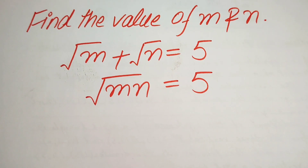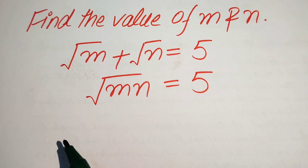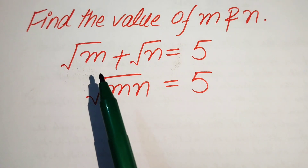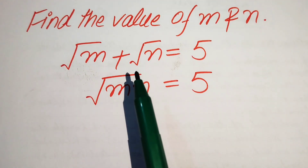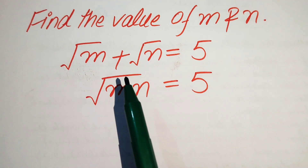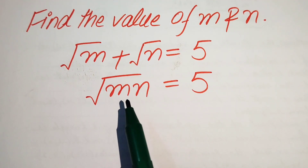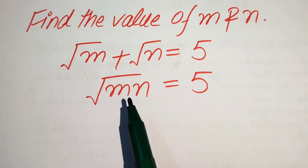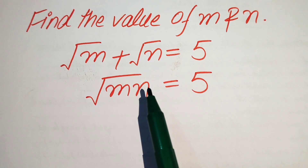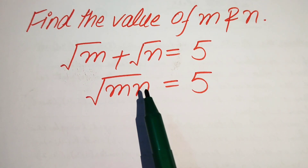Hello everyone, welcome. We're going to solve this Math Olympiad algebra problem. We have: square root of m plus square root of n equals 5, and square root of mn equals 5.